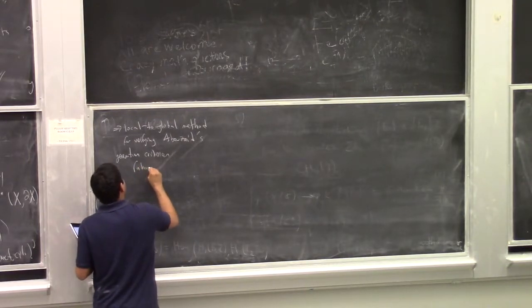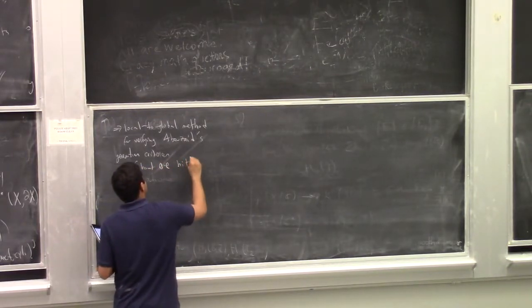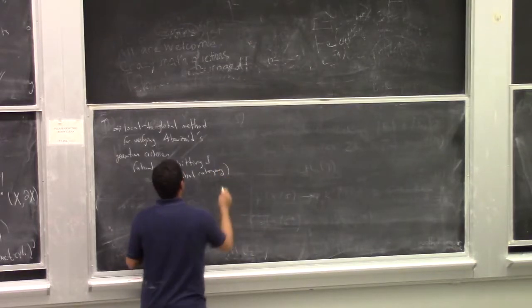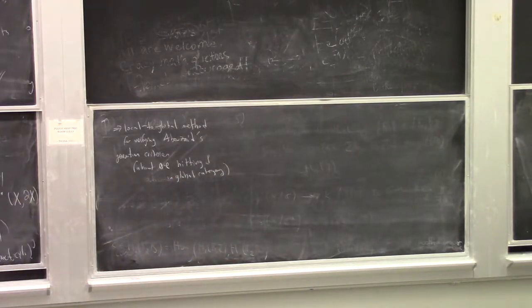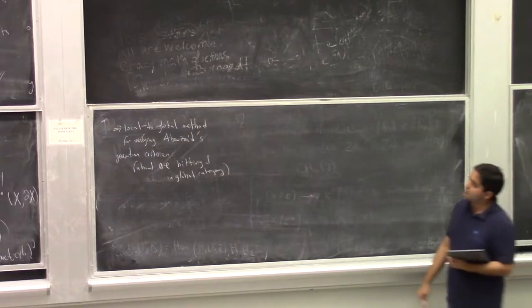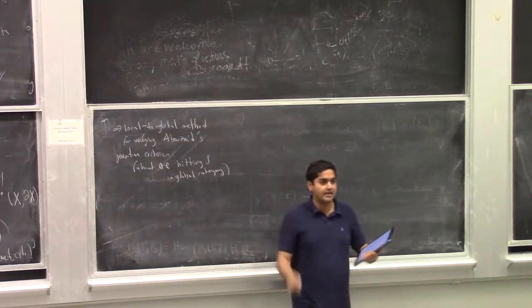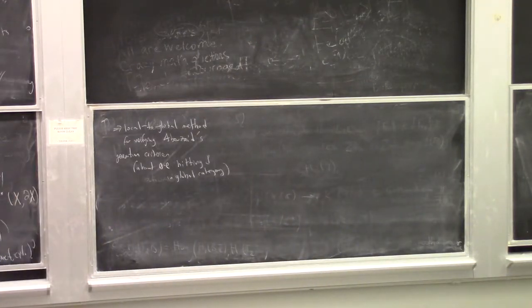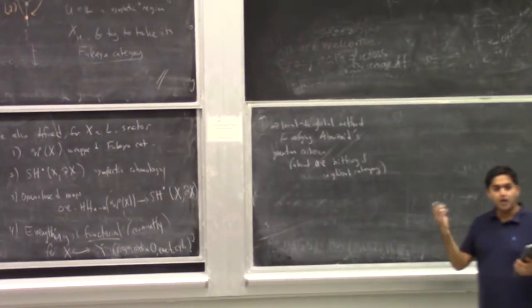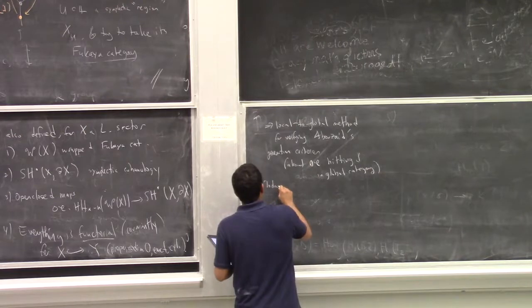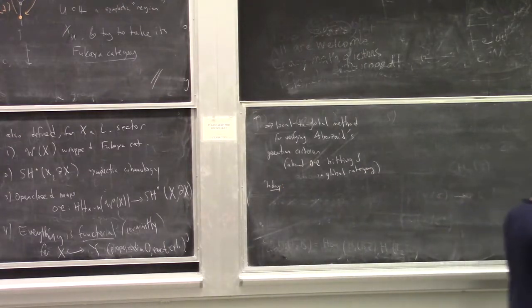This gave us a local-to-global method for verifying a generation criterion: about a certain open-closed map hitting one in the global category. If the local open-closed maps are sufficiently nice and calculable, you can deduce that open-closed hits one globally without doing any calculations. This was nice because sometimes these local categories are finite-dimensional smooth-proper categories, whereas your global thing may not have finite-dimensional hom spaces.